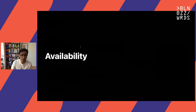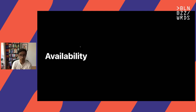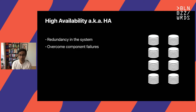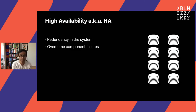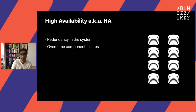Moving on to availability. Availability is the probability that a system will work as required, when required, during a mission — the time when you really intend to use the system. A system which aims to ensure an agreed level of operational performance, generally termed as uptime, for a higher than normal period is called a highly available system. When the system is not available, it's considered to be downtime. A highly available system is designed with redundancy to take care of both micro and macro level failures, to overcome component failures at different levels.